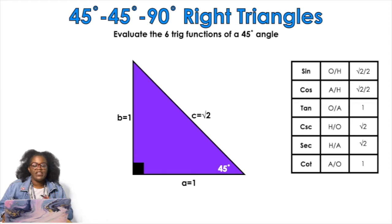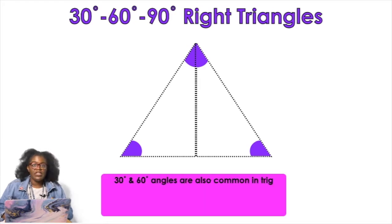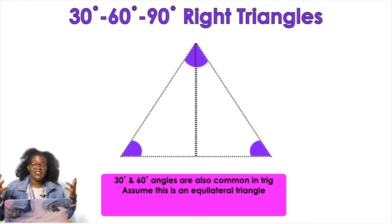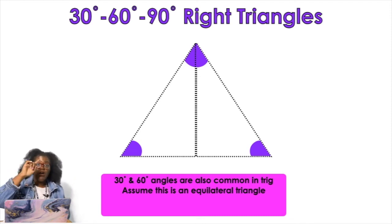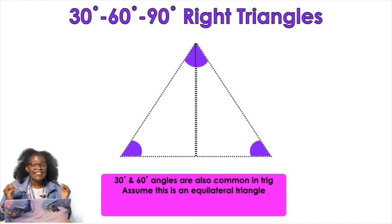That's the 45-45-90 right triangle and its trig values. Now let's talk about a 30-60-90 right triangle. We know that 30-degree and 60-degree angles are common in trig. We're going to start with an equilateral triangle — all the angles are the same. Since all triangles have 180 degrees, 180 divided by 3 gives us 60 degrees for each angle.